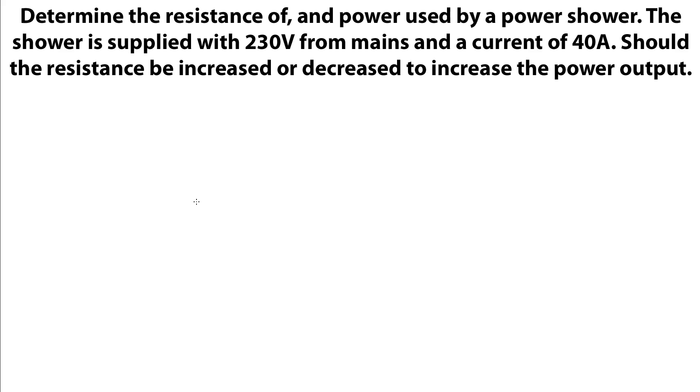So here's a fairly straightforward example that we can use. This question states, determine the resistance of and the power used by a power shower. The shower is supplied with 230 volts from mains and a current of 40 amps. Should the resistance be increased or decreased to increase the power output?